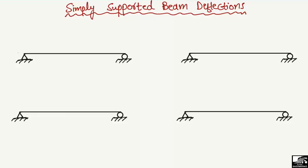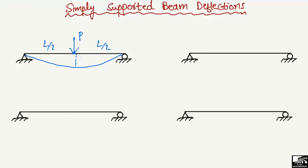Starting with the first beam: a simply supported beam with a hinge support and a roller support. The point load P acts at the midpoint of the beam — L/2 from the left and L/2 from the right, where L is the total length. Due to this point load, the maximum deflection occurs at mid-span. The maximum deflection formula is: δ_max = PL³ / (48EI).